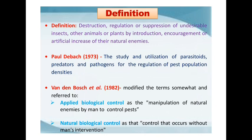A definition is also given by Paul DeBach, the pioneer worker in biological control: the study and utilization of parasitoids, predators and pathogens for the regulation of pest population densities. Van Den Bosch et al. modified the term and referred to applied biological control — the manipulation of natural enemies by man to control pest — and natural biological control, which is the control that occurs without man's intervention.